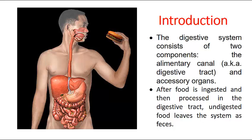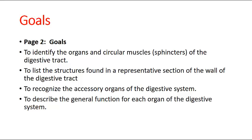The goals for this understanding are: to identify the organs and circular muscle of the digestive tract, to list the structures found and represent the section of the wall of the digestive tract, to recognize the accessory organs involved with the digestive system, and to describe the general function of each organ and how they work together as a unit.